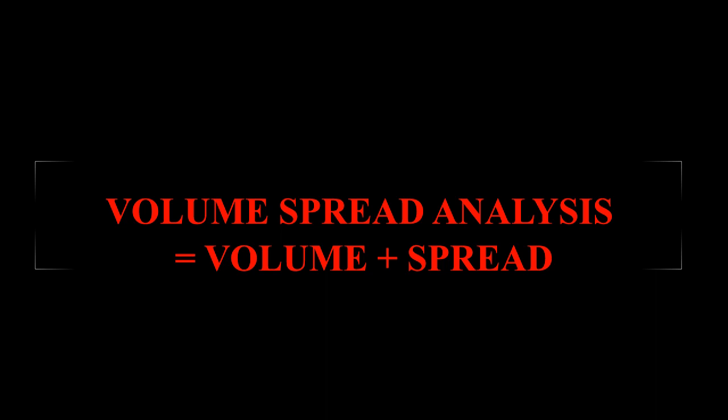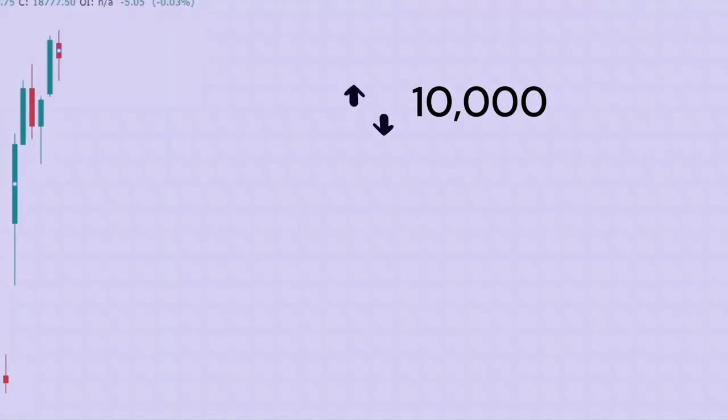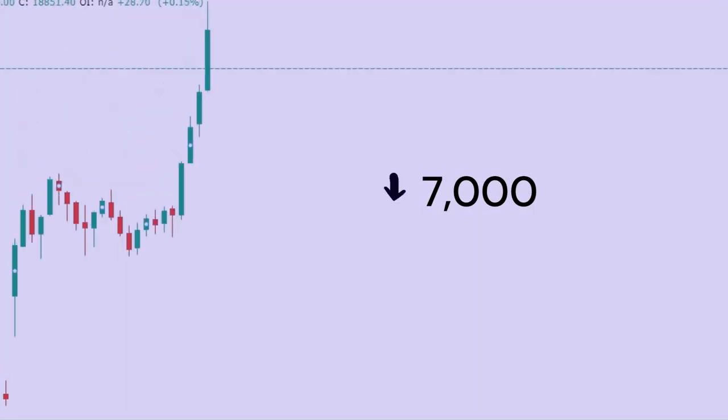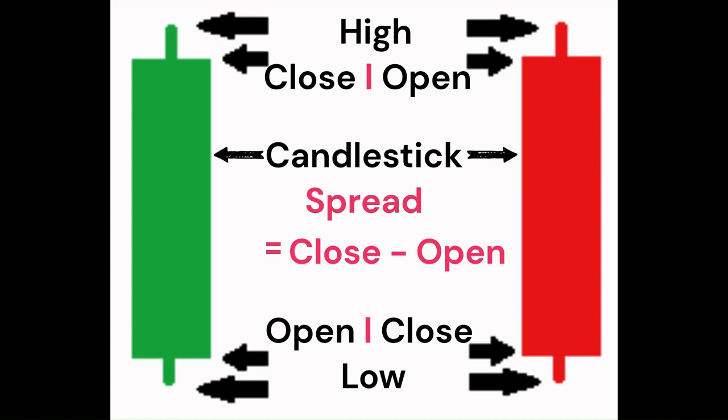Breaking VSA gives you two parts: volume and spread. Volume is the amount of shares of a particular stock being traded at a given time. For example, if 10,000 shares of ABC stock are bought and sold in a day, that is the volume. If the volume drops to 7,000 the next day, we say the volume has decreased.